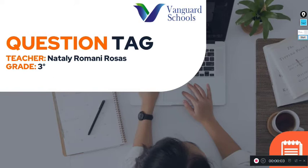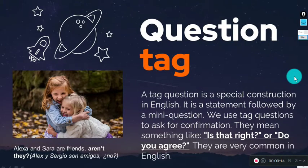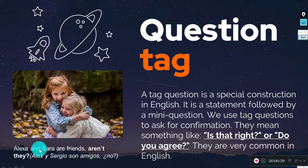Hi students, welcome to another English class. Today we're going to focus on using question tags. A question tag is a special construction in English — it's a small mini question. We use the question tag to ask for confirmation, meaning something like 'is that right?' or 'do you agree?' They are very common in English. For example: Alexa and Sarah are friends, aren't they?